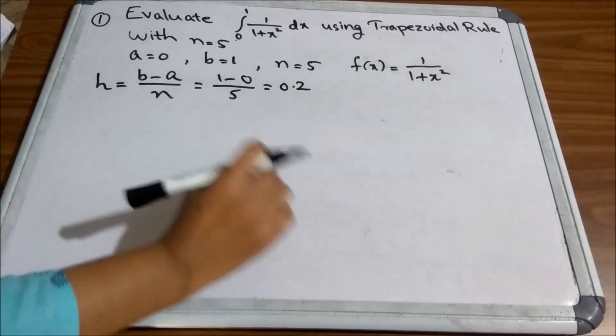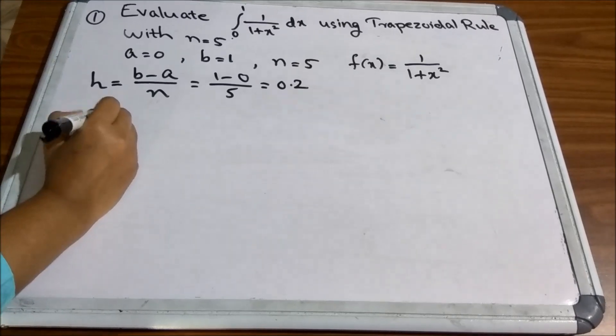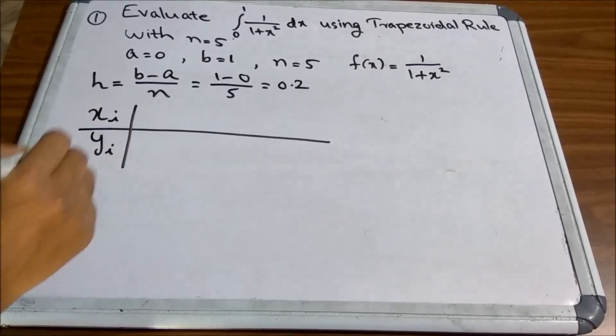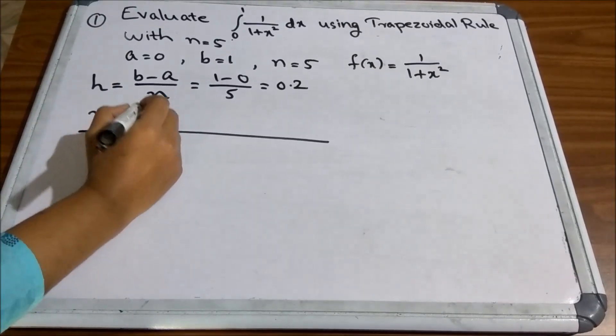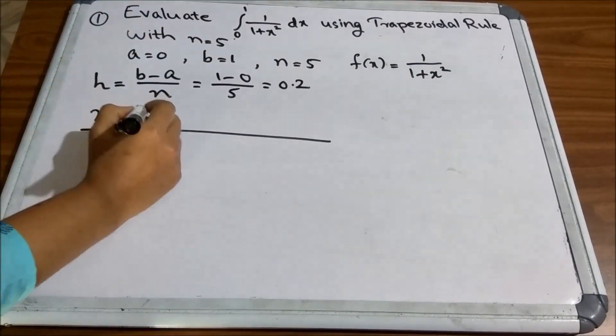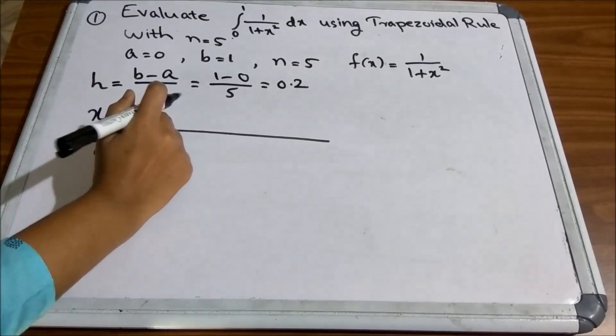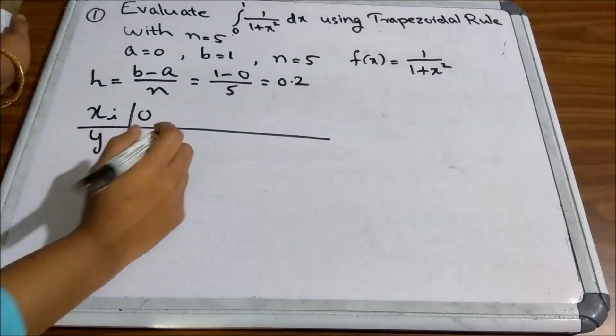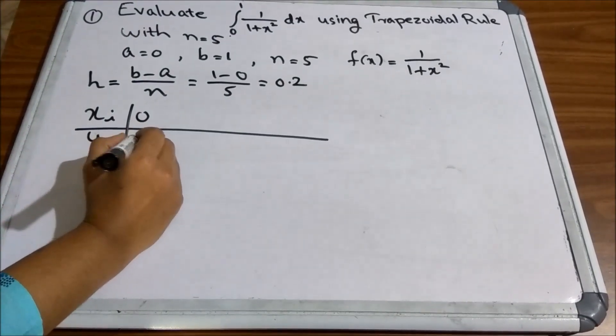So, we have to form a table of values of xi's and yi's. So, you can see that x0 is 0. Corresponding yi is 1 by 1 plus x square. So, 1 by 1 plus 0 square which is 1.